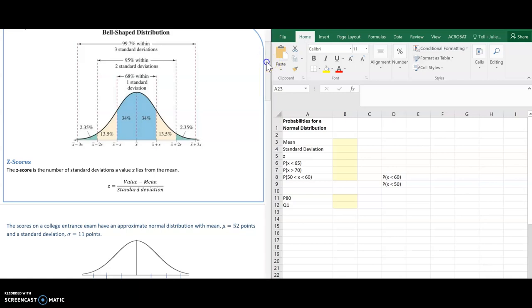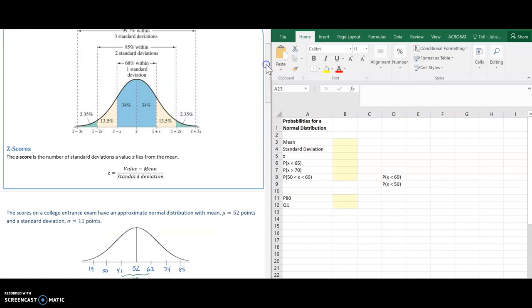So 52 plus 11 gives me 63, plus another 11 gives me 74, plus another 11 gives me 85. So there's one, two, and three standard deviations above the mean. And then I subtracted 11 on the left to get the 41, 30, and 19.